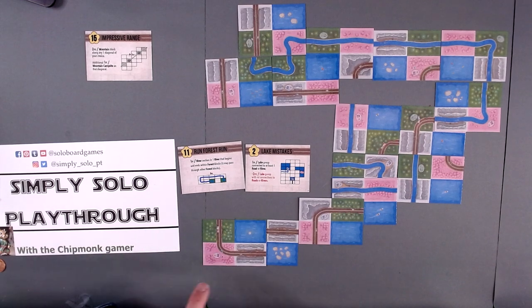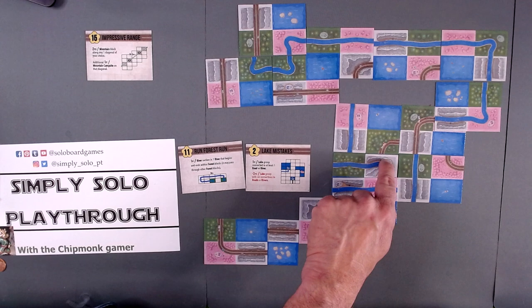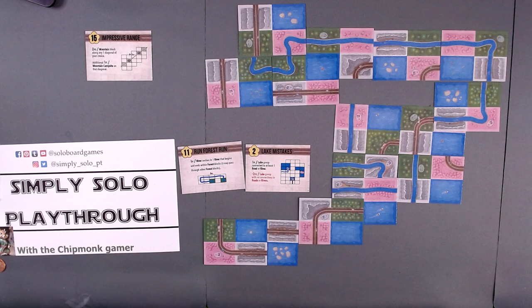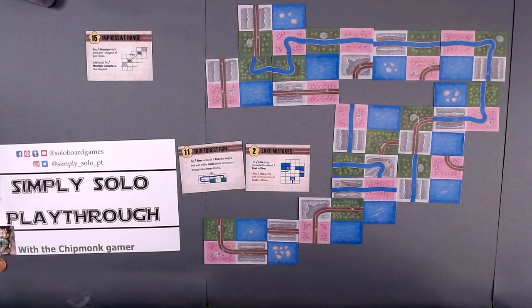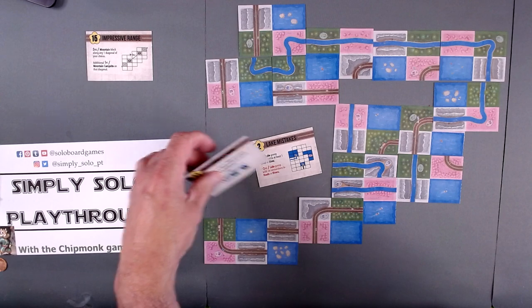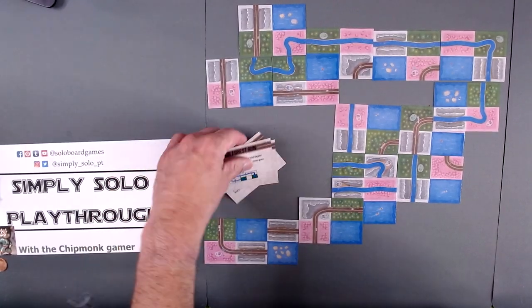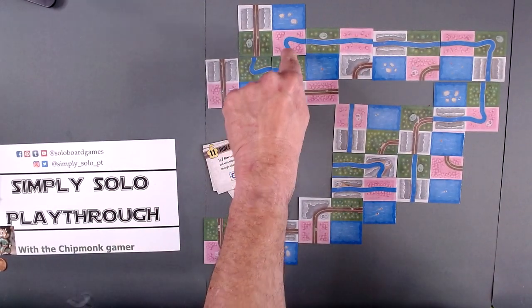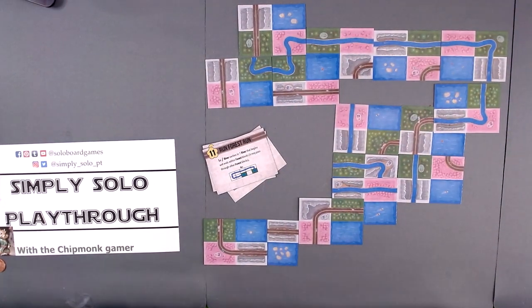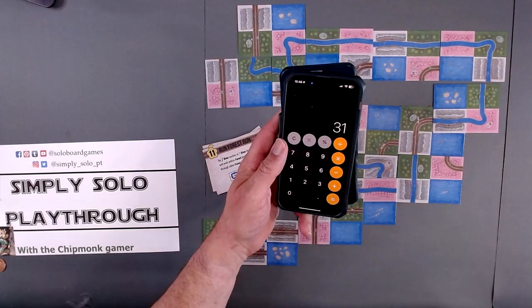We end up with 2, 4, 6, 8, 10, 12, 14, 15, 16, 17. Seventeen plus one is eighteen, plus Run Forest Run is one section: 1, 2, 3, 4, 5, 6, 7, 8, 9, 10, 11, 12, 13. That gives us thirty-one.